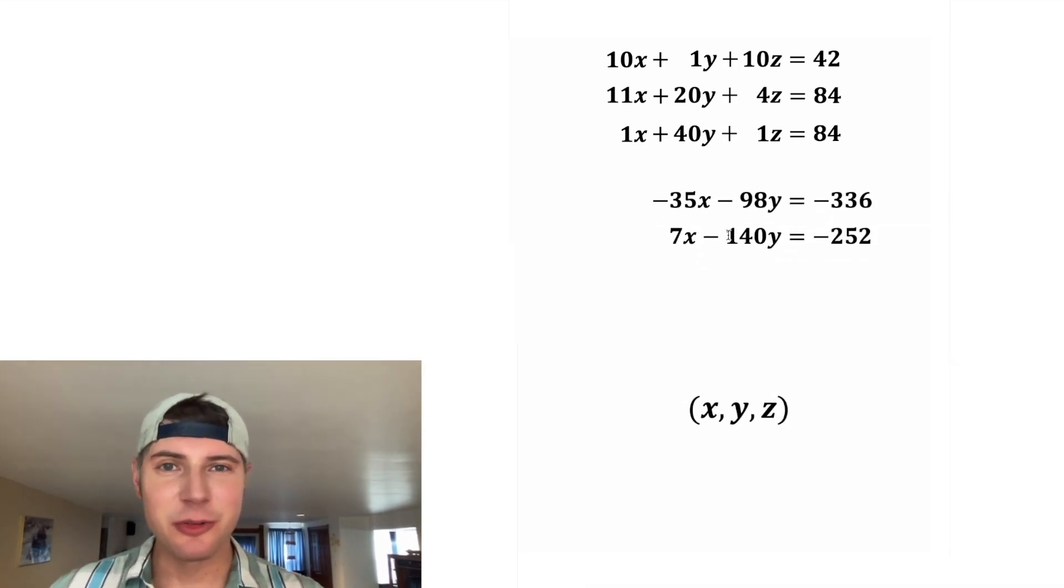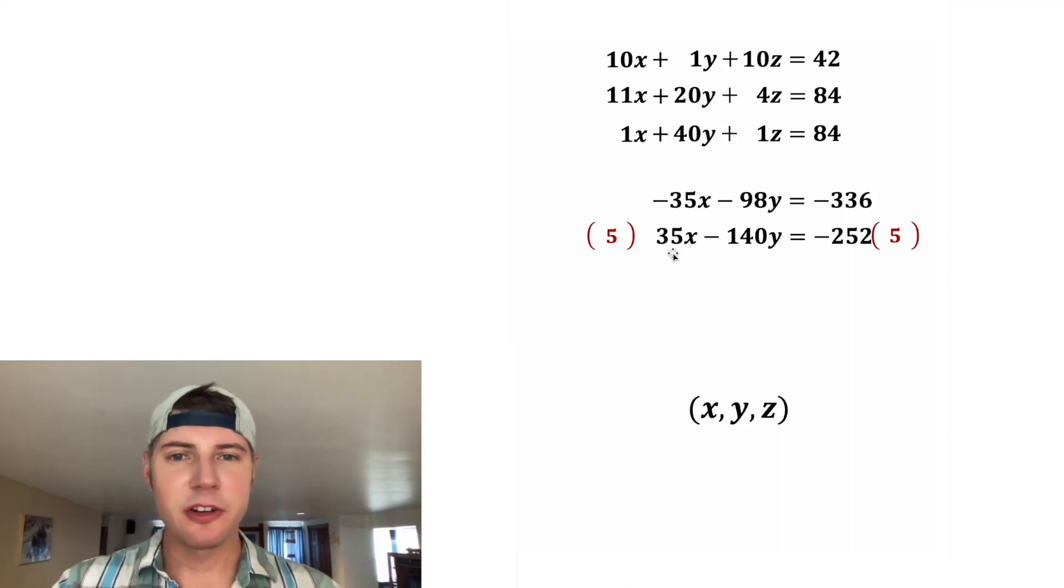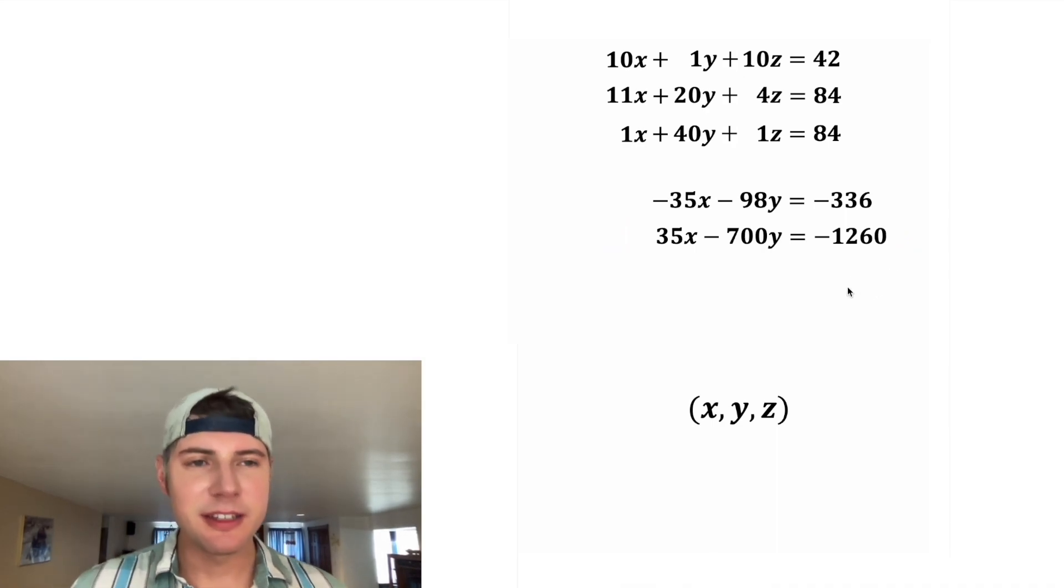So now we have two equations and two variables. We're going to use these to get rid of one of the variables. I think it's going to be easiest if we get rid of x. We can multiply both sides of this bottom row by 5. 5 times 7 is 35, and 5 times negative 140 is negative 700. And on this side, 5 times negative 252 is negative 1260.